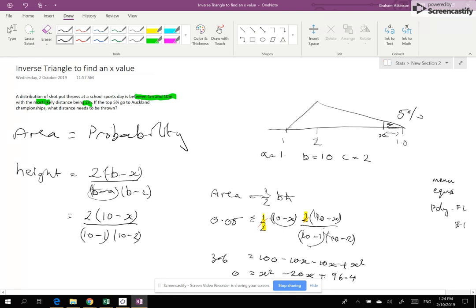And then it gives me a space for me typing in the equations. So I'm typing in the coefficients. So I've got 1 X squared minus 20 X plus 96.4. So that's 1 minus 20 and 96.4. And when I click solve, it's going to give me two values because it's quadratic.